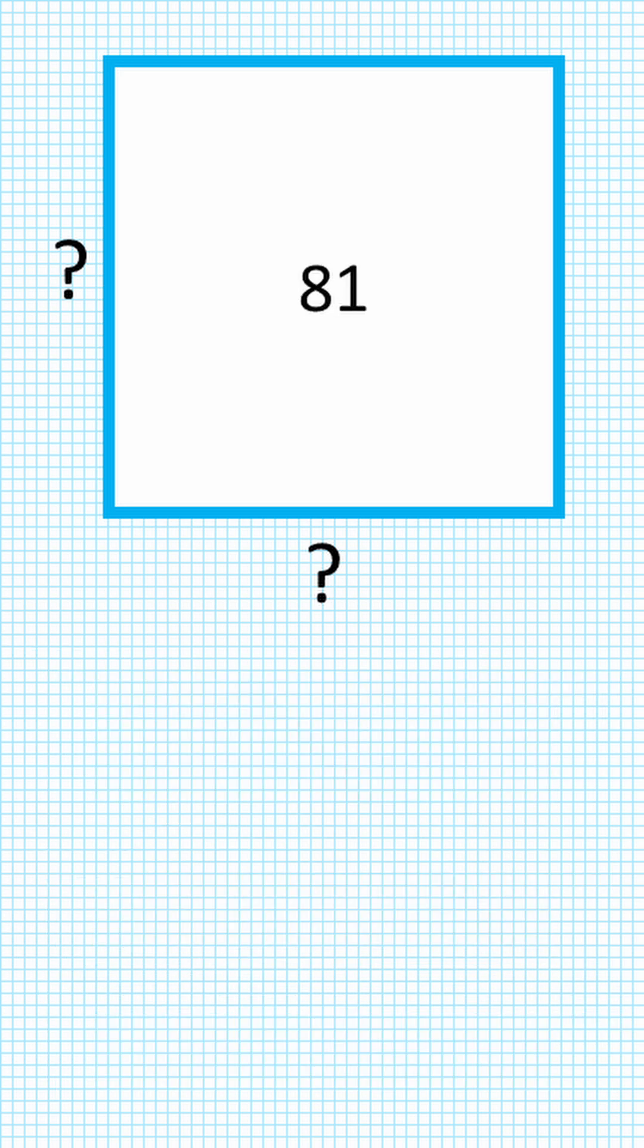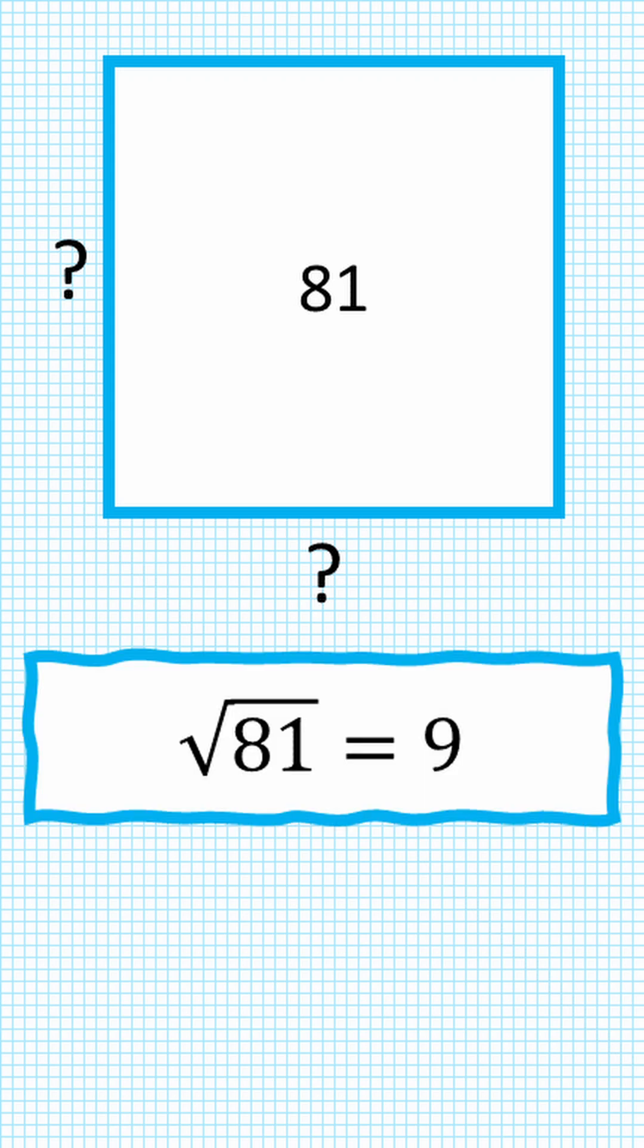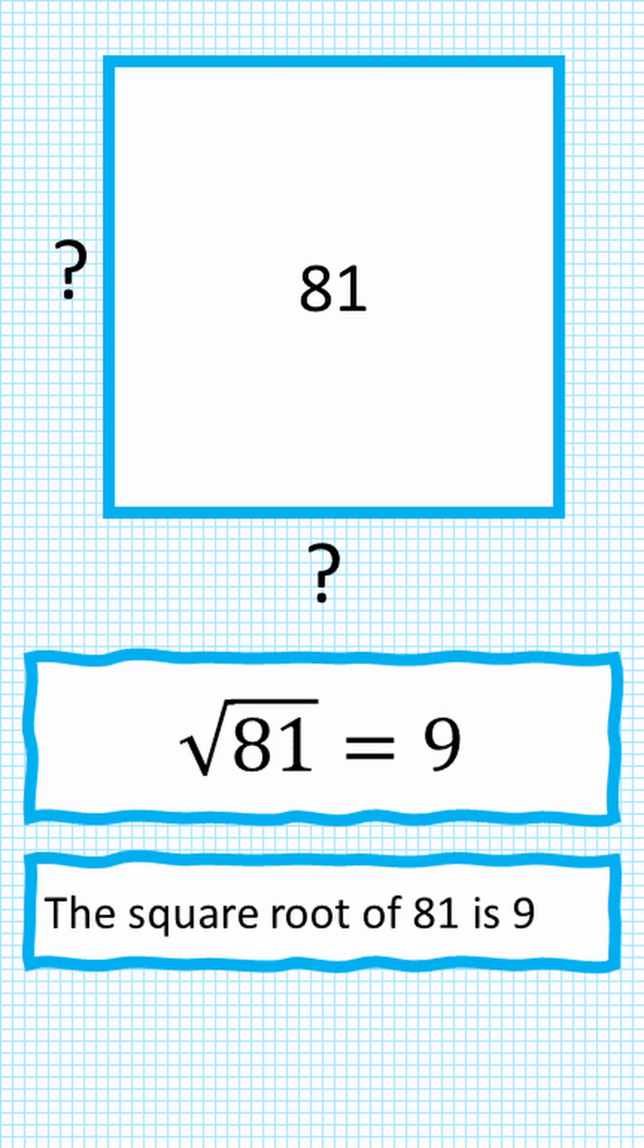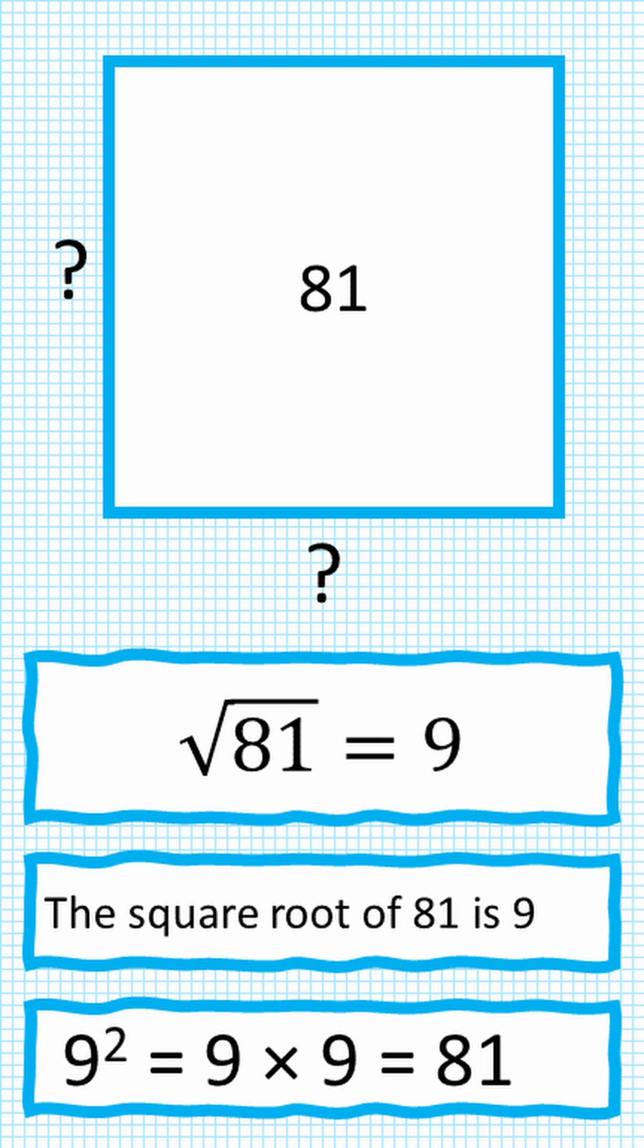And here's a square of area 81. To find the length of a side we'd find the square root of 81 which is 9, and that is because 9 times 9 equals 81.